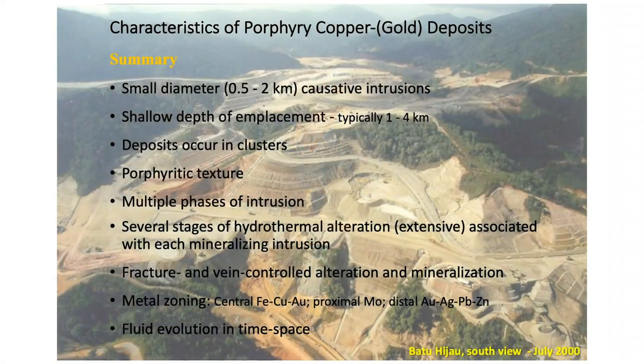How do the fluids get through the rock? It's fracture and vein controlled — a fracture permeability game. There's also metal zoning, which geochemistry can pick up on. You can have central iron, copper, and gold; proximal molybdenum in many porphyries — sometimes molybdenum in the core, often distal. Distal gold, silver, lead, and zinc are found in intermediate sulfidation vein systems typically occurring 800 meters to 5 kilometers from the porphyry centers. Porphyry geology is basically telling you about fluid evolution in time and space — early and hot, late and cold — with different metals and alteration minerals providing vectors for exploration drilling.